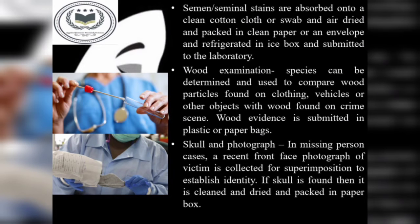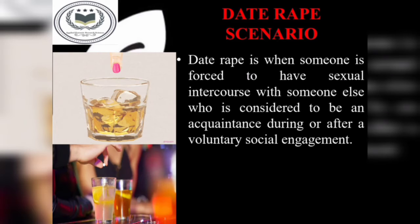A recent front-face photograph of the victim is taken for superimposition to establish identity. If a skull is found, it is cleaned, dried, and packed in paper. Investigators use semen detection kits and sexual assault kits for the collection of evidence found at rape crime scenes.